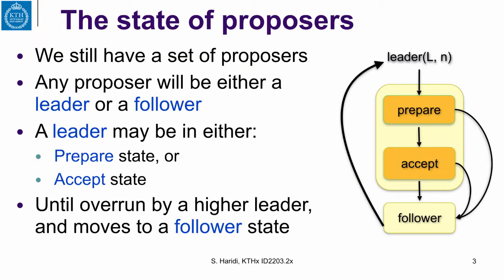Let us look again at the state of the proposer. We have a set of proposers; one of them will be elected as a leader, and a proposer will be either a leader or a follower. Whenever a leader crashes or is overrun by another leader, it moves to a follower state. A leader will be either in a prepare state or an accept state, corresponding to the two phases of sequence Paxos. Sequence Paxos always starts in a prepare phase and then moves to an accept phase, until that leader is overrun by a higher leader, in which case it moves to be a follower.